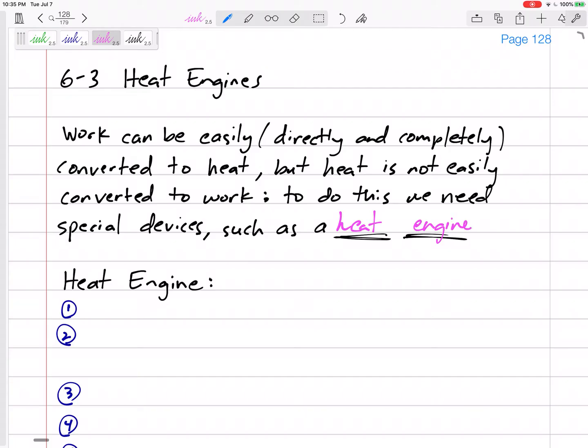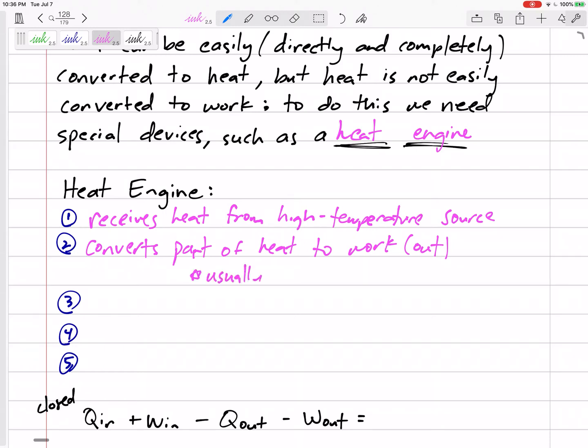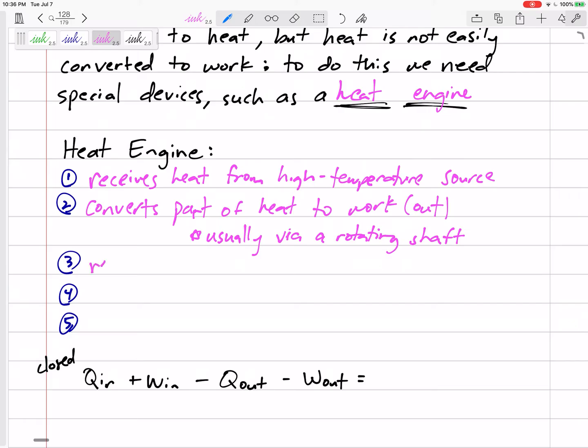A heat engine receives heat from a high temperature source, then it converts part of that heat to work done by the system, usually via a rotating shaft, and then it rejects the remaining heat to a low temperature sink.